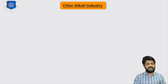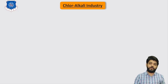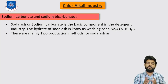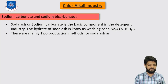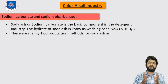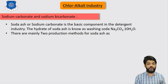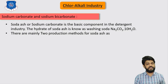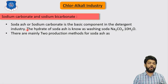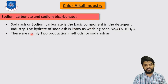In today's session, we are going to discuss products in the caustic industries — sodium carbonate and sodium bicarbonate. Both these chemicals are very important in the chemical industries and are largely used in the detergent and soap industries. Soda ash, or sodium bicarbonate, is a basic compound in the detergent industries.